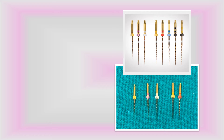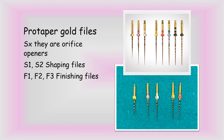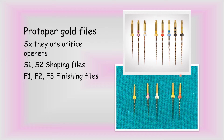Let me pick one file system — ProTaper Gold — and describe how to use it. In this system, there are two types of files: shaping files and finishing files. The first file is SX, which is the orifice opener. Then we have shaping files S1 and S2. Then finishing files F1, F2, F3, F4, and F5. Normally, root canal preparation is completed using F1 or at most F2.